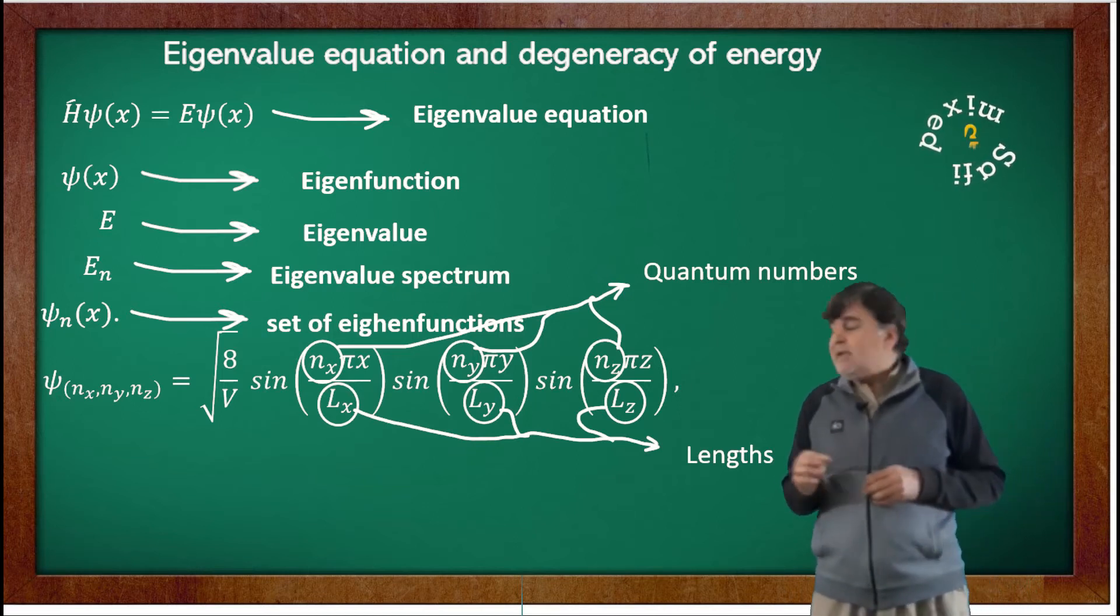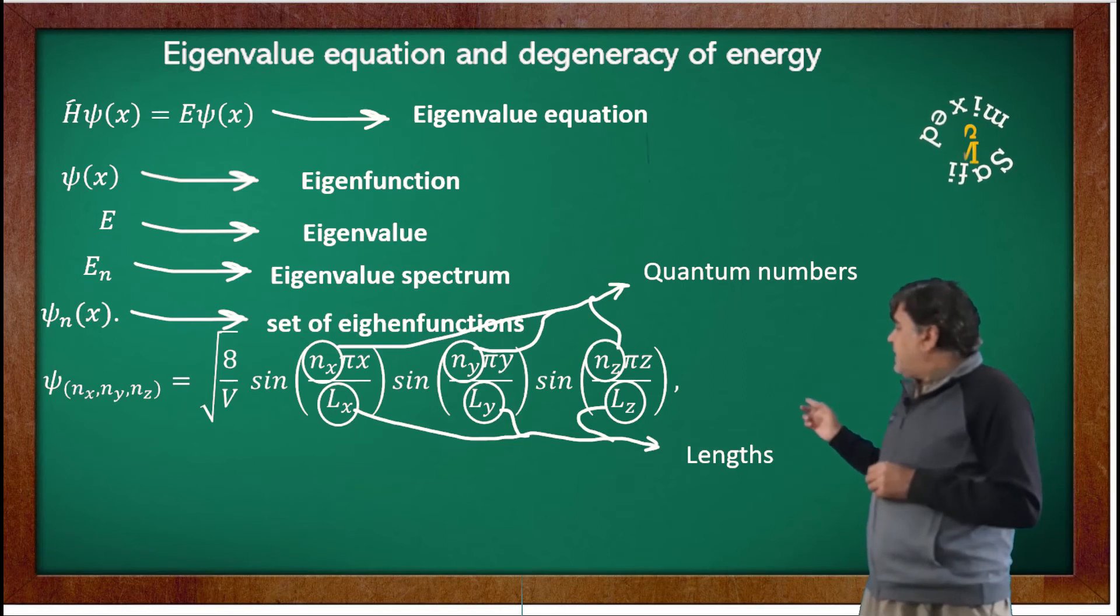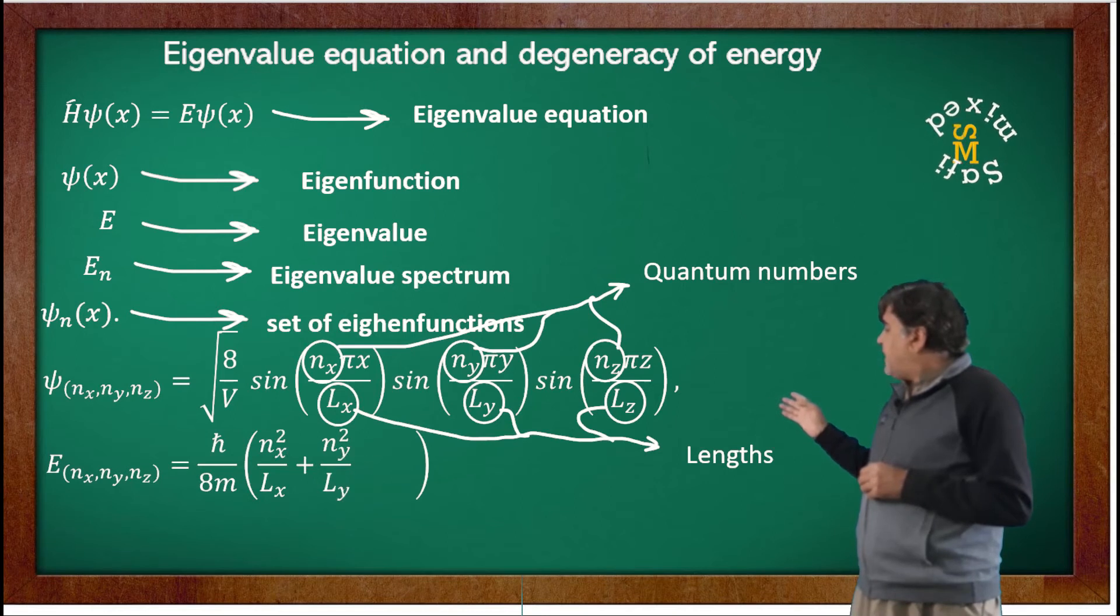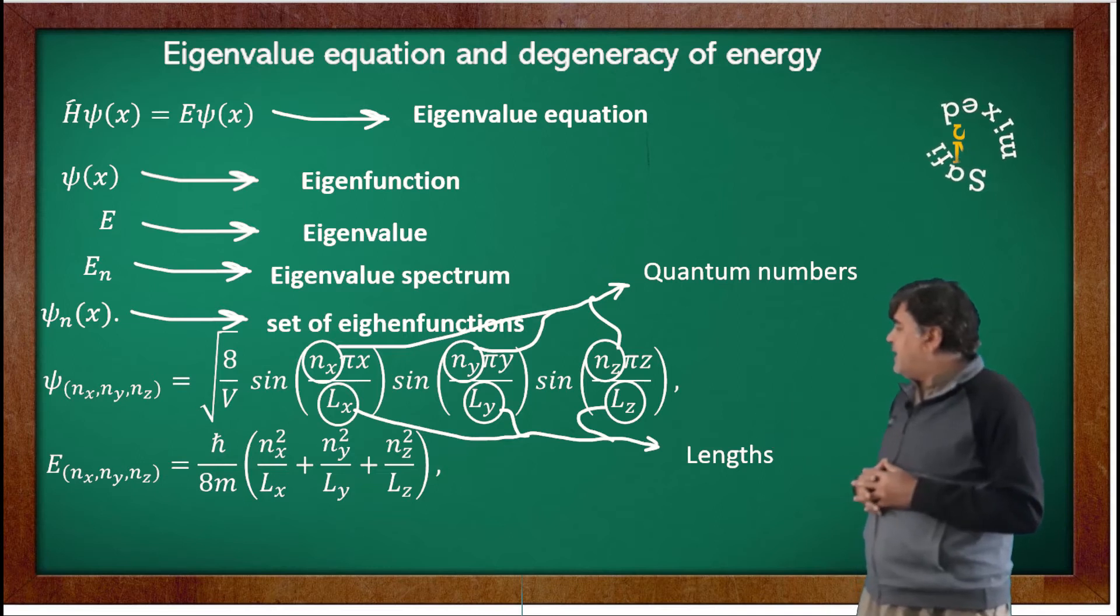E_{n_x,n_y,n_z} = (ℏ²/8m)[n_x²/L_x² + n_y²/L_y² + n_z²/L_z²].